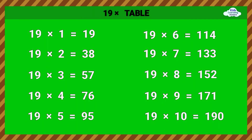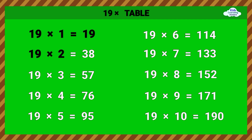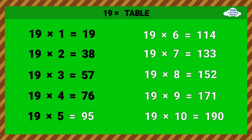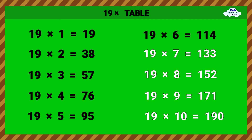Nineteen Times Table. 19 times 1 equals 19. 19 times 2 equals 38. 19 times 3 equals 57. 19 times 4 equals 76. 19 times 5 equals 95. 19 times 6 equals 114. 19 times 7 equals 133.